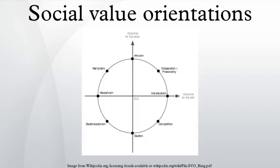If a subject chooses an option indicating a particular SVO in at least six out of the nine items, the subject is categorized accordingly. That is, a subject is categorized as cooperative prosocial, individualistic, or competitive.